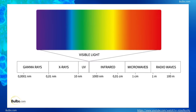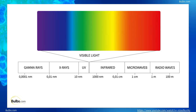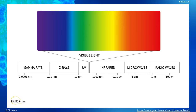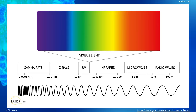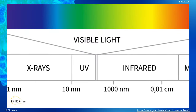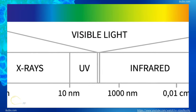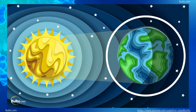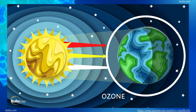Ultraviolet or UV light is part of the electromagnetic spectrum, which includes radio waves at one end of the spectrum and gamma rays at the opposite end. When organized by wavelength, UV light falls between visible light and x-rays. UV light is the same as the rays that we get from the sun, and there are three types of ultraviolet light that reach the ozone layer around the earth: UVA, UVB, and UVC.